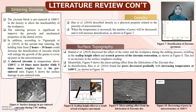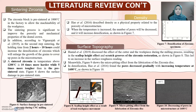Regarding density, it is described as a physical property related to the porosity of the microstructure. When temperature is increased, the number of pores decreases and densification increases, as shown in Figure 7. Regarding surface topography, Hamid discussed the effect of the cutter and workpiece during the milling process resulting in scallop height effect and scratch grooves on the zirconia restoration, as shown in Figure 8. Scallop height effect leads to an increase in the surface roughness reading. Figure 9 shows the micro-pitting effect from the fabrication of the zirconia disc. In densification, pores decrease gradually with increasing temperature at 1600 degrees Celsius.